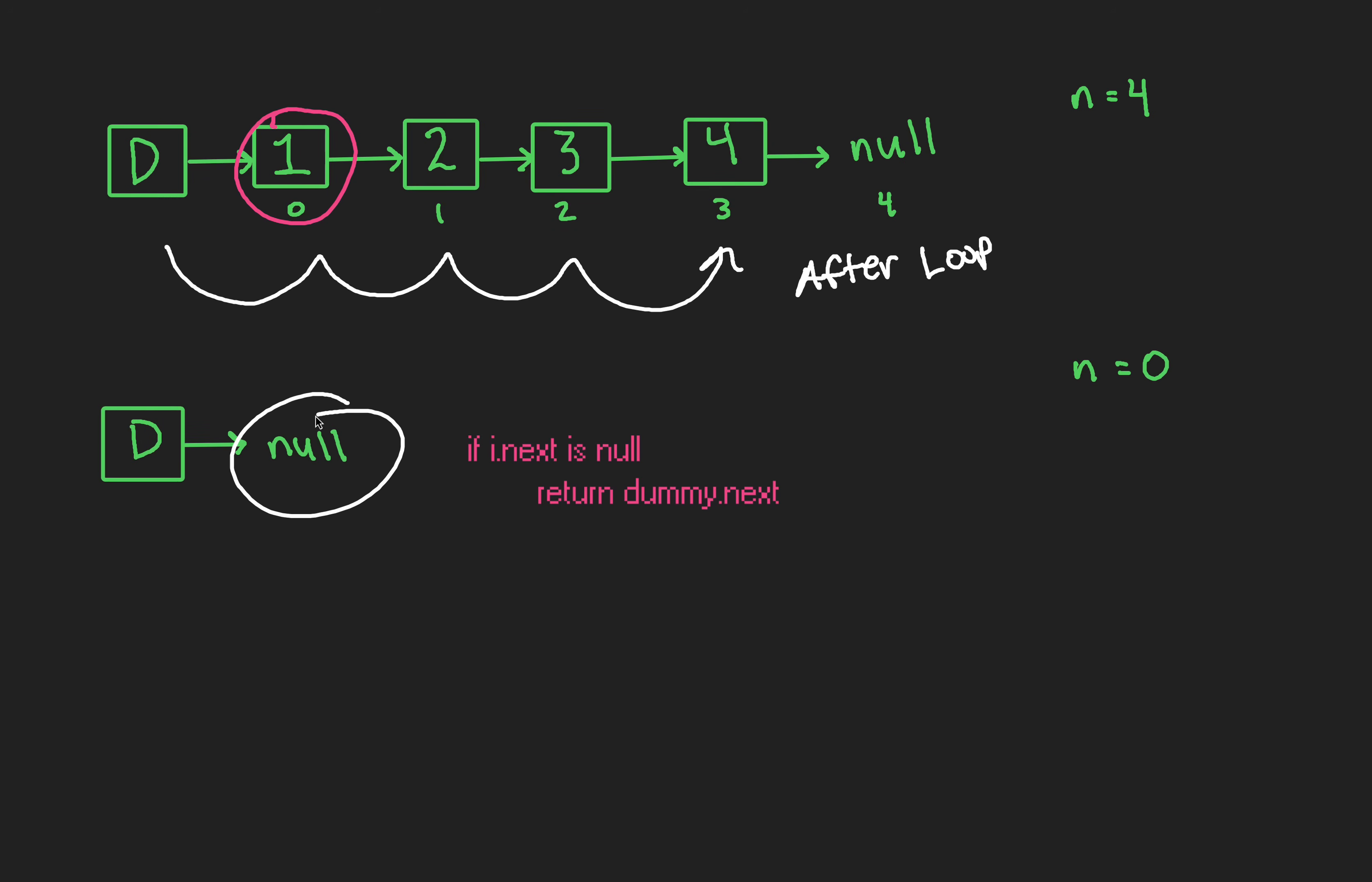Next up, what if we had 0 nodes and our n was also 0? We'd run our loop, to go nowhere, post loop, we'd encounter the same issue as before. I next is a null pointer, so we'll simply return dummy next, which is null. Great, it's a 2 for 1 if statement.